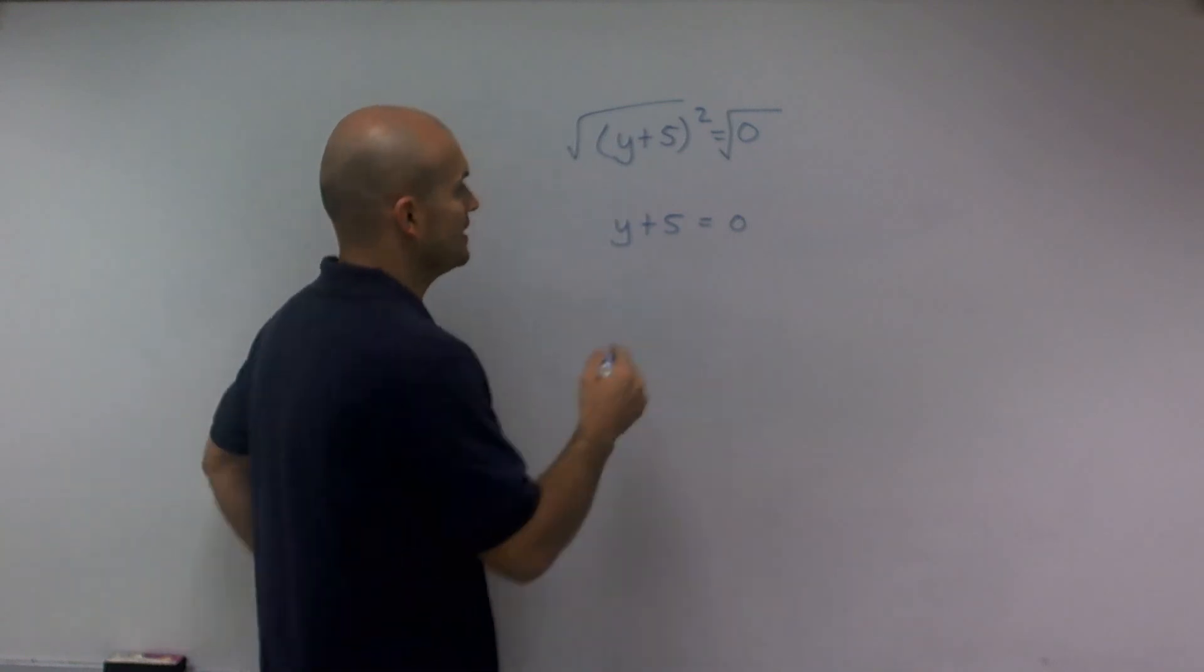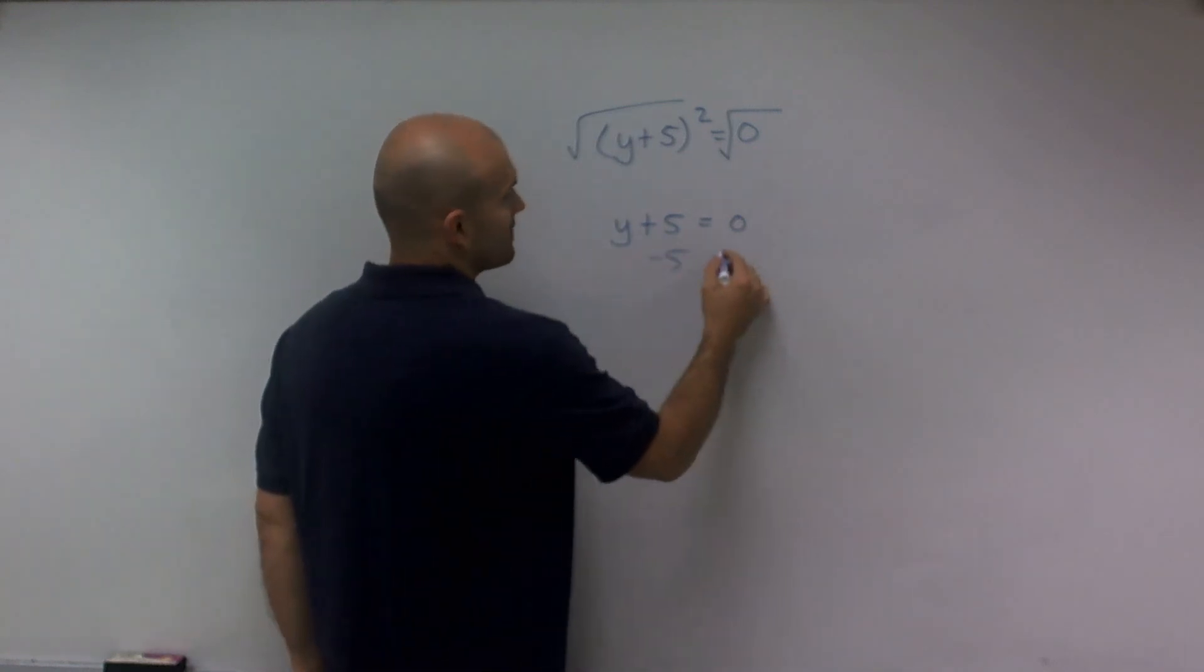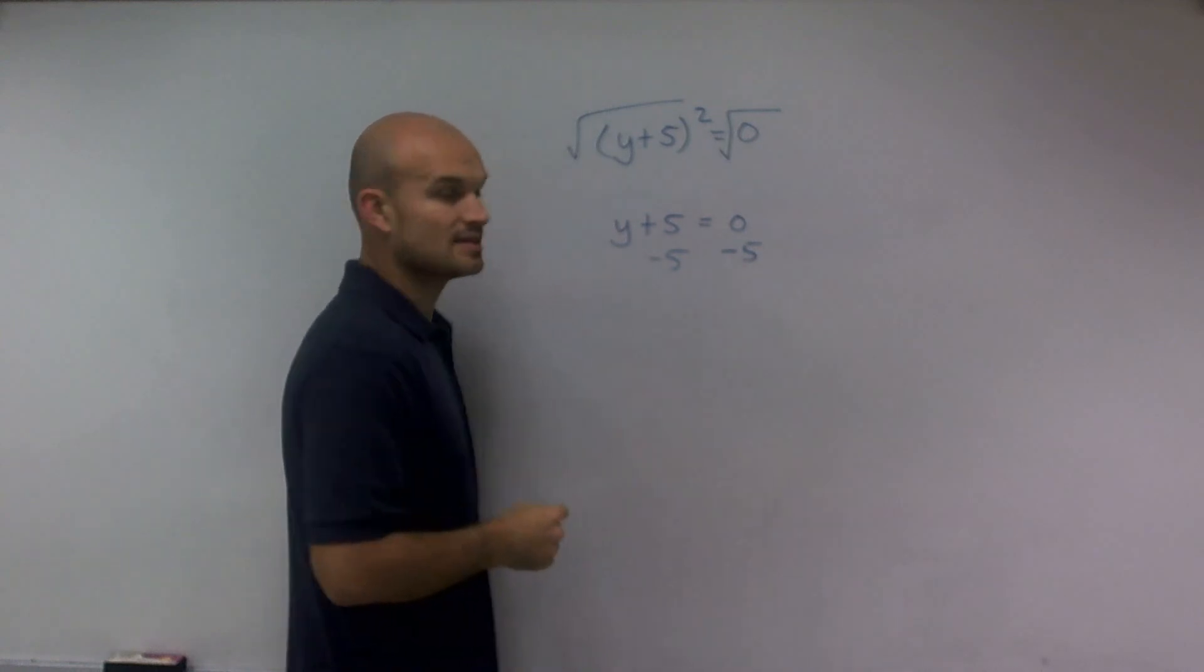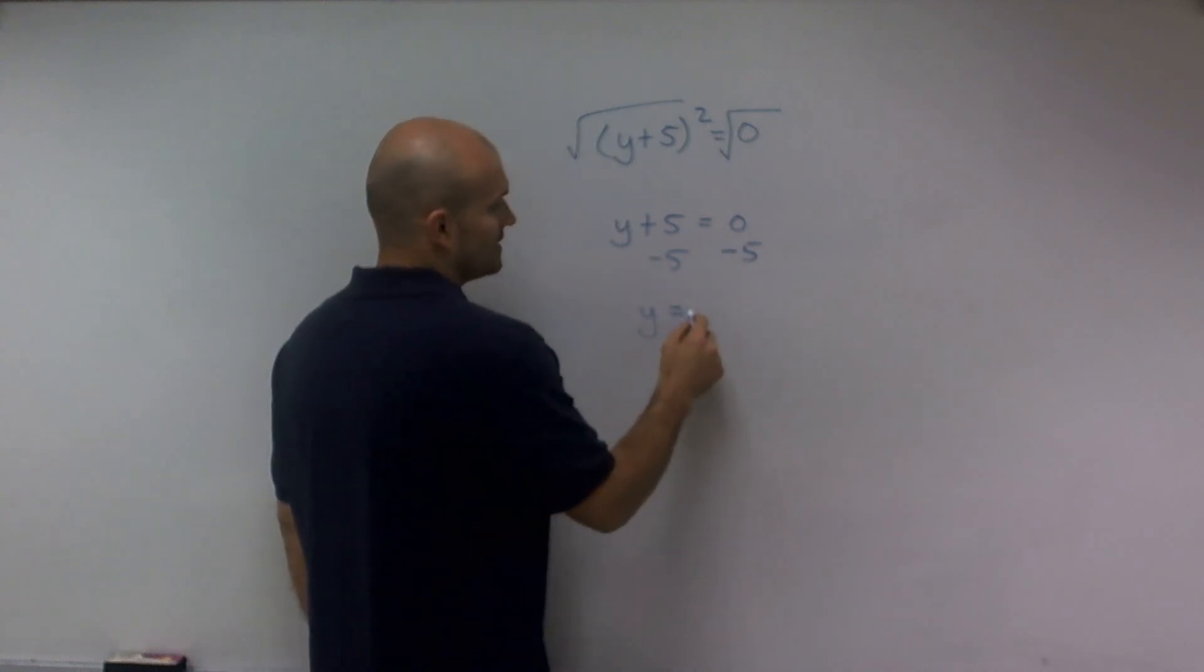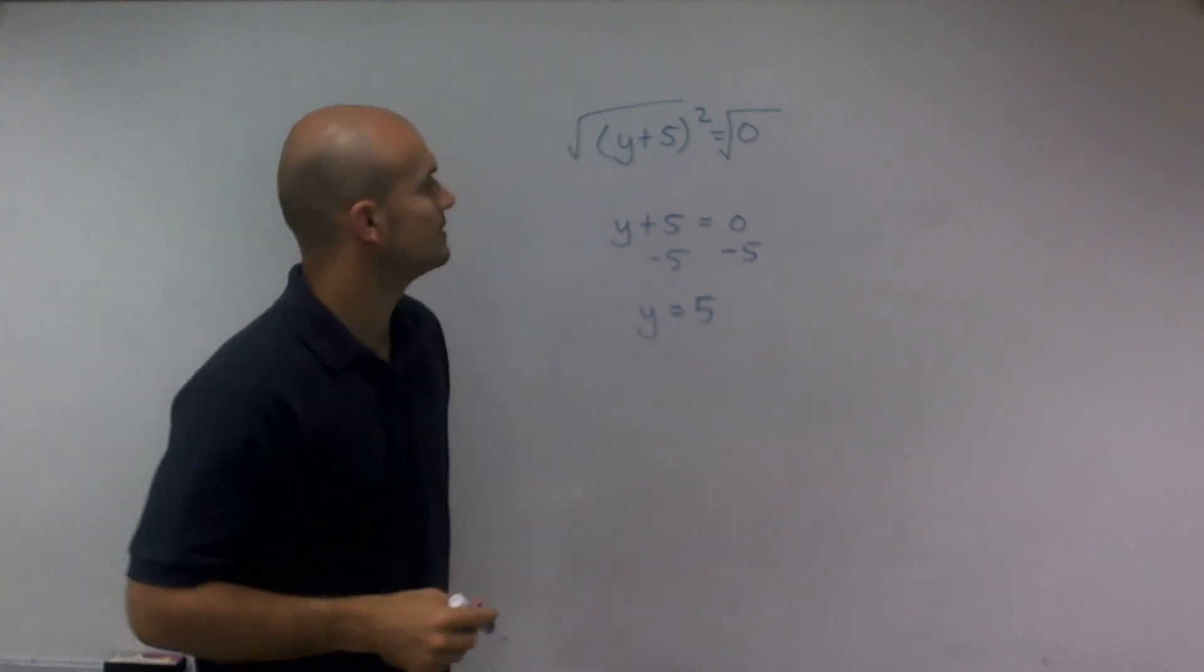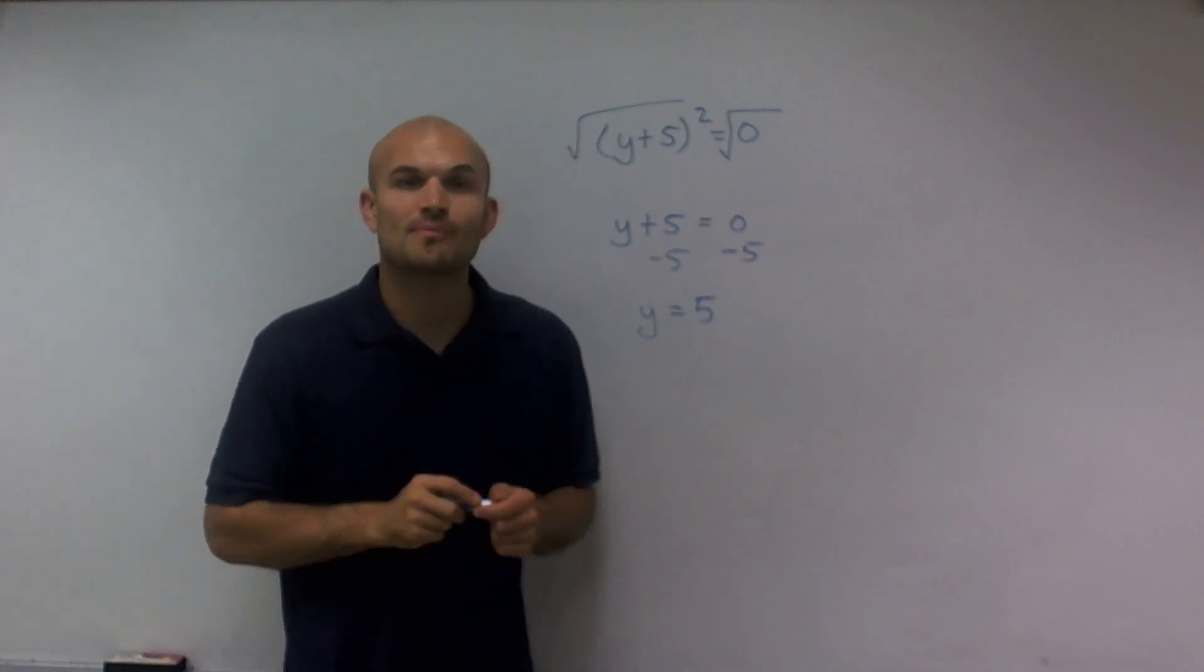Then, now what I need to do is just go ahead and subtract 5 from both sides, and I'm getting y equals 5. And there you go. Now I've solved for my variable. Thanks.